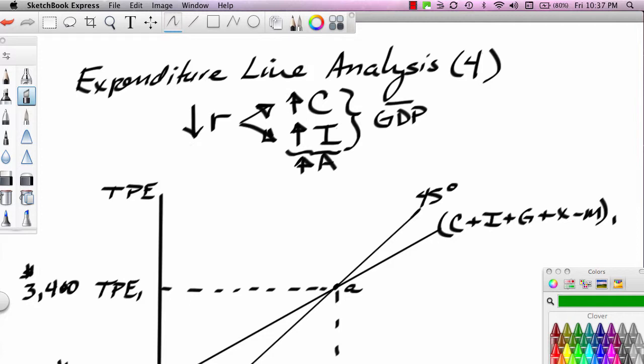So small r here stands for interest rates, real interest rates, inflation-adjusted interest rates. Notice that interest rates have fallen and that has motivated households to spend more, to borrow more and spend more, and it's motivated businesses to borrow and invest more. And notice that both of these changes in spending are cases of an increase in A, or autonomous expenditures.